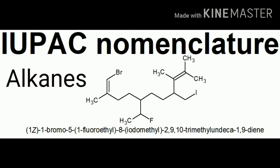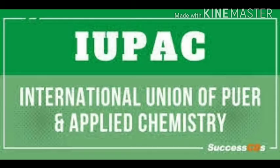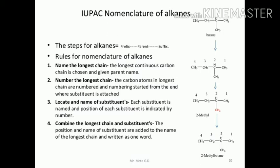Good morning students. Today we will learn IUPAC nomenclature of alkanes. You already know about alkanes — alkanes is a saturated compound with carbon-carbon single bonds. IUPAC stands for International Union of Pure and Applied Chemistry. So let's start with IUPAC nomenclature of alkanes.